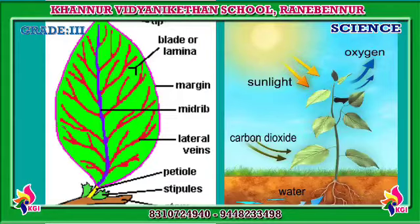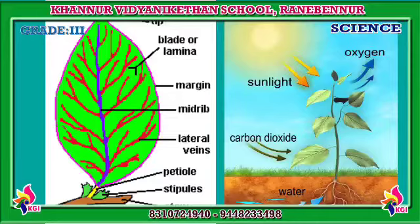This is why a leaf is called the kitchen or the food factory of a plant. The food made by the leaves is sent to all parts of the plant through the stem. In your higher classes you will learn more about the food factory concept and photosynthesis.